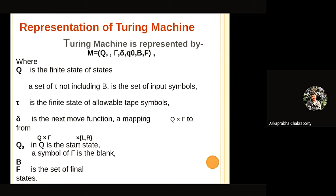The representation of Turing machine: the Turing machine is basically represented by 6 variables, where Q is the finite set of states, and Turing machine is the set where we include the set of input symbols. The DEL is the next moving function or a mapping, and F is the final state.